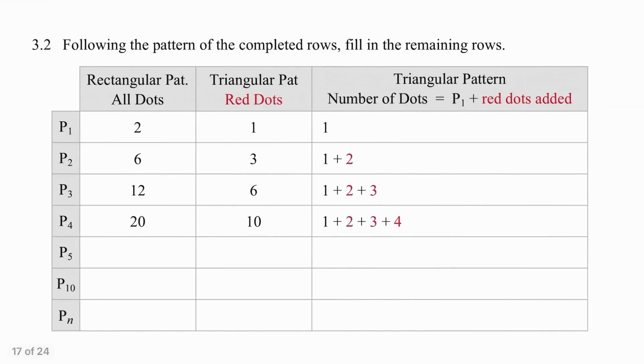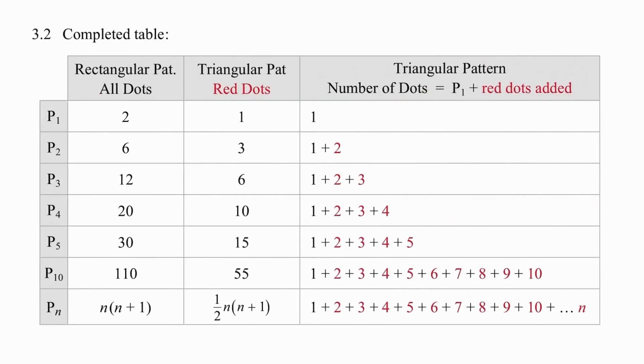Pause this video and see if you can fill the rest in on your own. We know pattern 5 is 5 times 6, which gives us 30. We simply halve that, and we add the first 5 natural numbers. Pattern 10 is 10 times 11. We halve that, and we add the first 10 natural numbers. The formula for the rectangular numbers is n times n plus 1. We halve that, giving us a half of n times n plus 1, and we add the first n natural numbers.